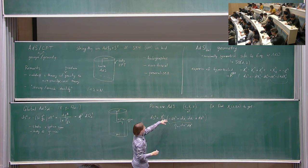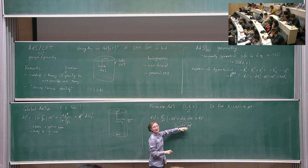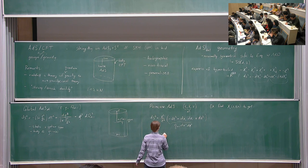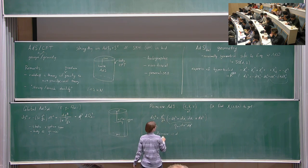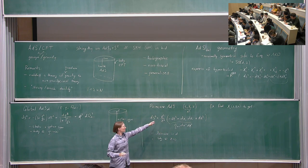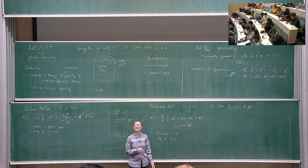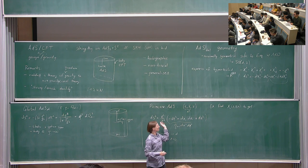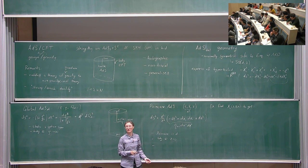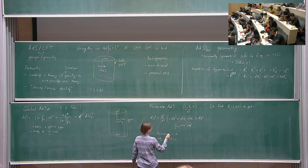However, the Poincaré patch is not geodesically complete. As z goes to infinity, the metric coefficients die down and you can reach z equals infinity in finite proper distance along spacelike or null trajectories. This is called the Poincaré horizon. So there is a horizon at z equals infinity, and we can extend past it. The Poincaré patch is just a patch of the full global AdS spacetime, not the entire thing.